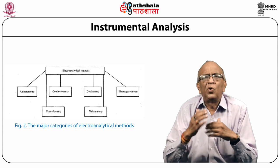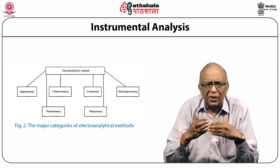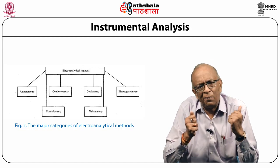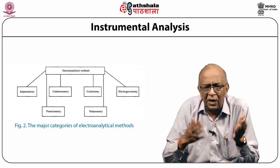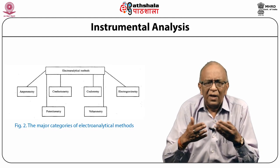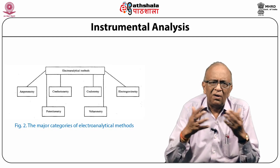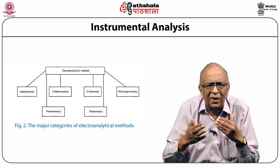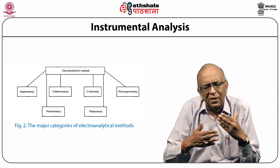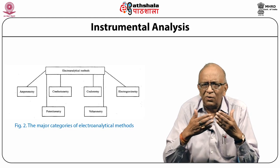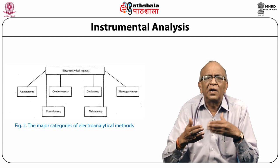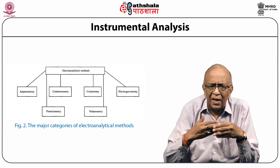For example, amperometry — as the name indicates — is the measurement of amperes: we keep the potential constant and measure the current. Another technique is electrogravimetry, where a substance is deposited by the application of potential on the surface and the weight of that substance is measured. Another technique is potentiometry, meaning the measurement of potential. Voltammetry involves applying potential while current is measured, producing a sigmoid curve. When a dropping mercury electrode is used, this technique is called polarography.